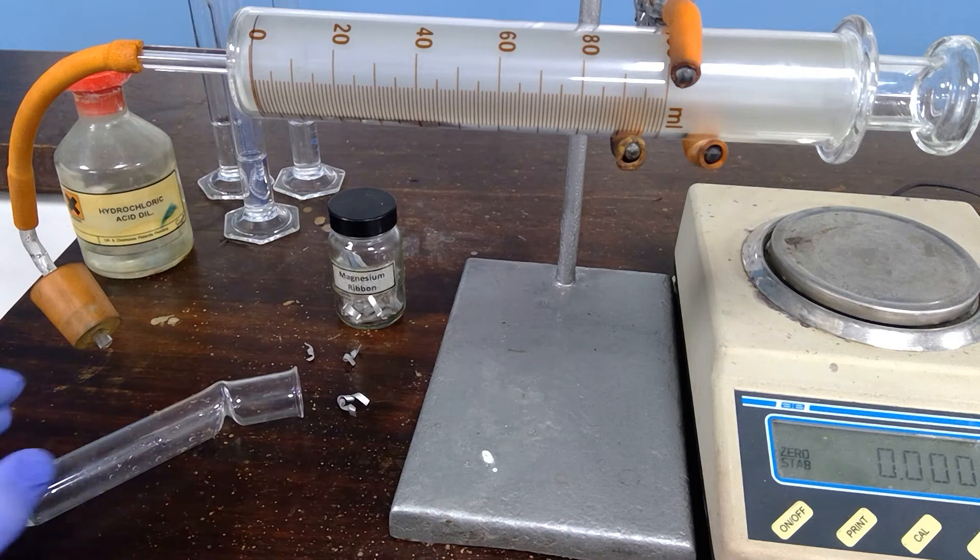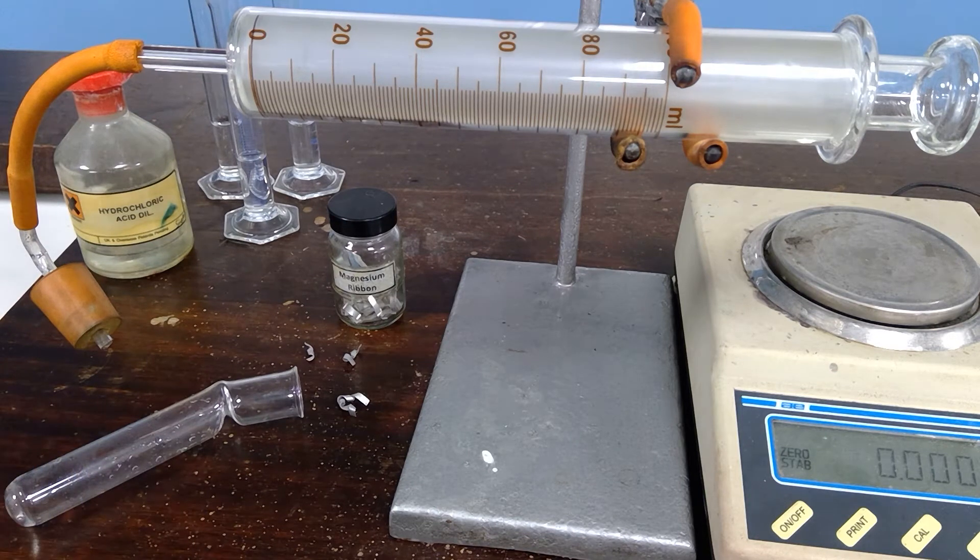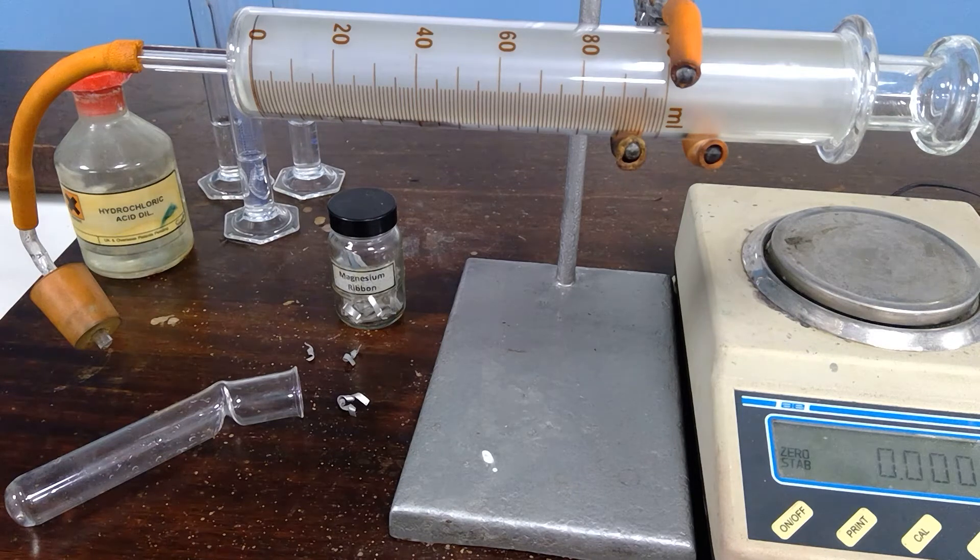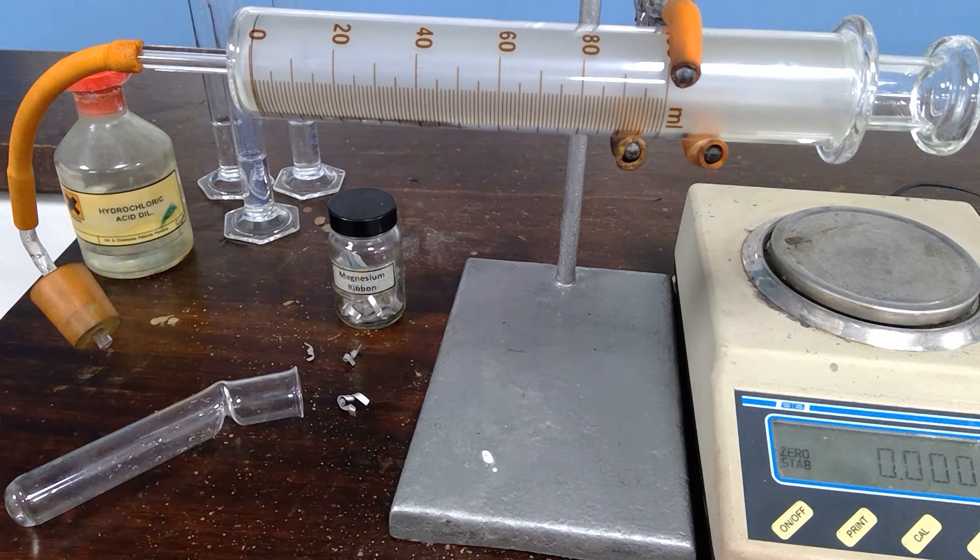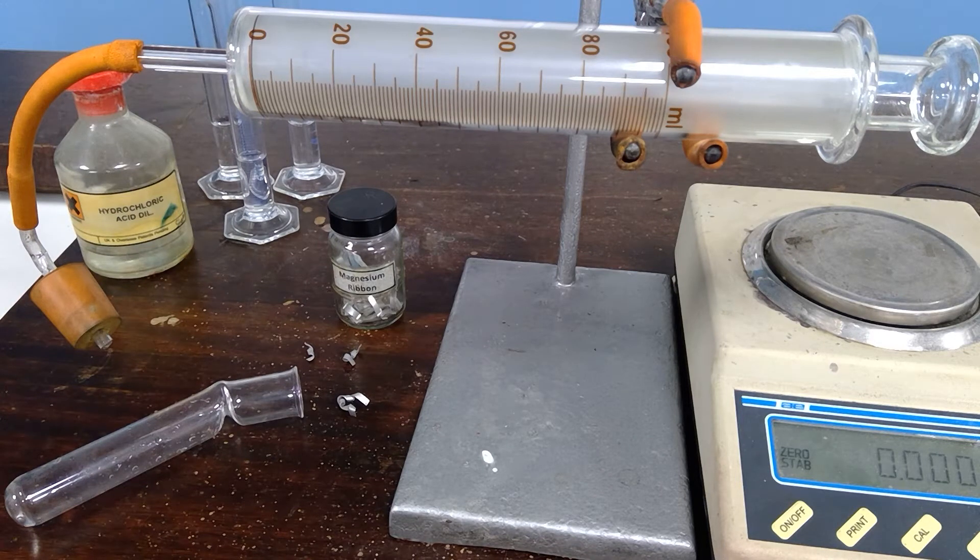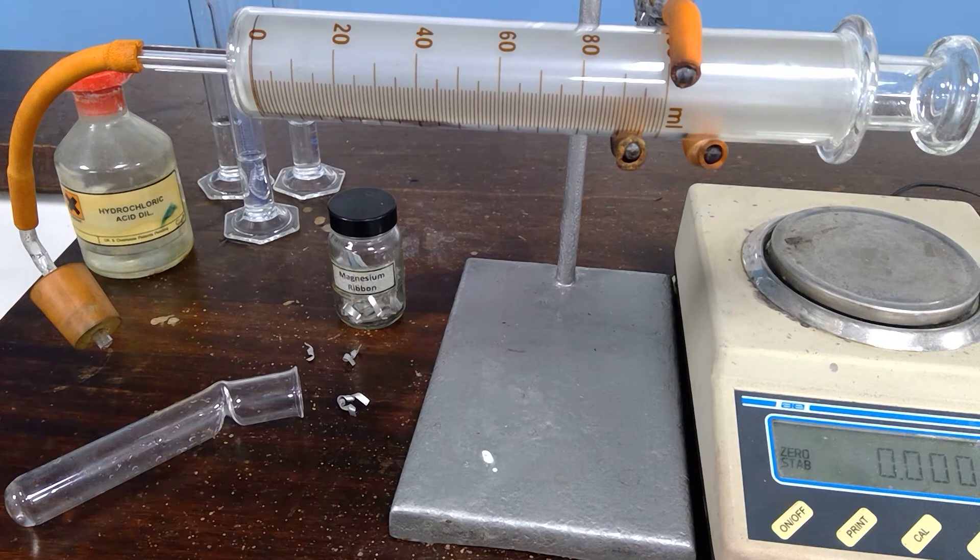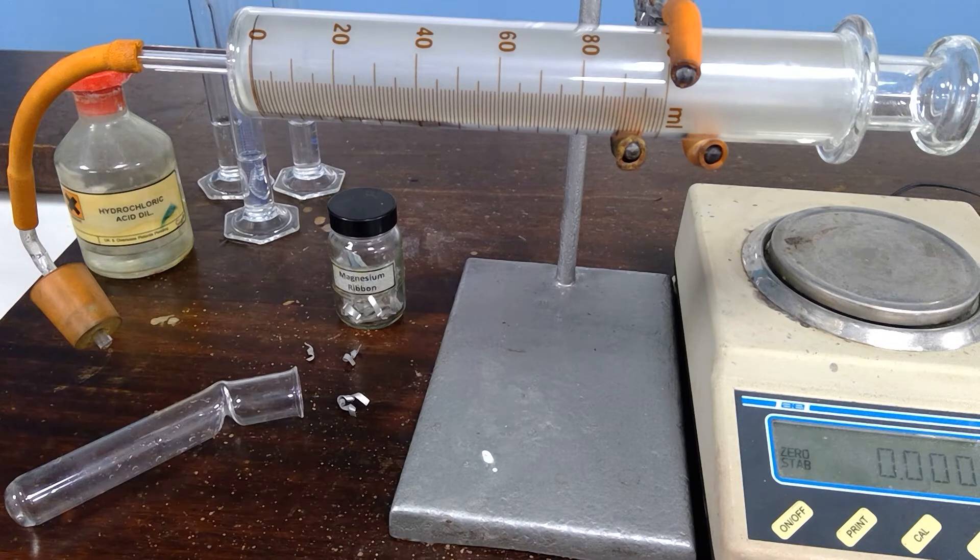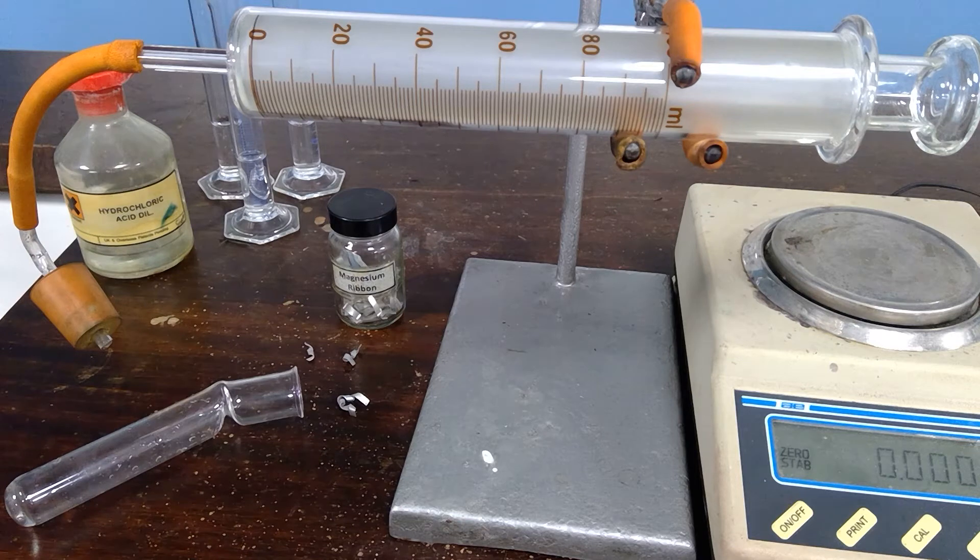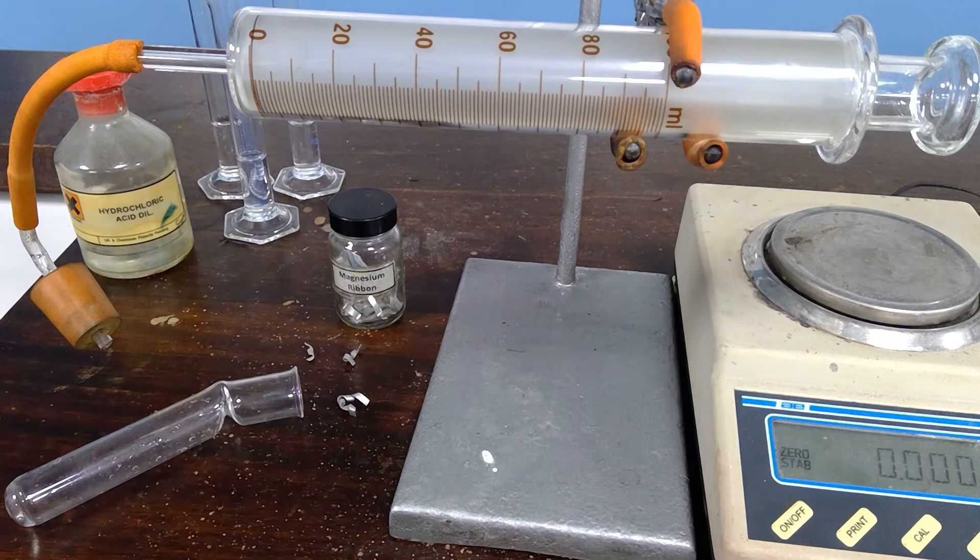Each time the experiment is done, please record the mass of the magnesium, which on this occasion is measured to three decimal places, very sensitive because the mass of magnesium determines the volume of hydrogen. We would not want to exceed 100 cm cubed or 100 mils as this gas syringe indicates. Cm cubed is the same unit size as a milliliter.